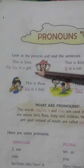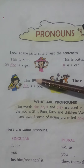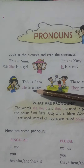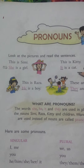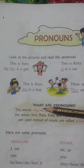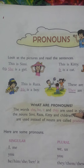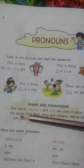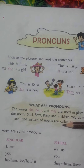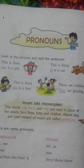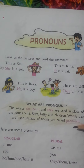For example: this is Simi, she is a girl. This is Raza, he is a boy. This is Kitty, it is a cat. The words she, he, it, and they are used in place of the nouns Simi, Raza, Kitty, and children. Words that are used instead of a noun are called pronouns.